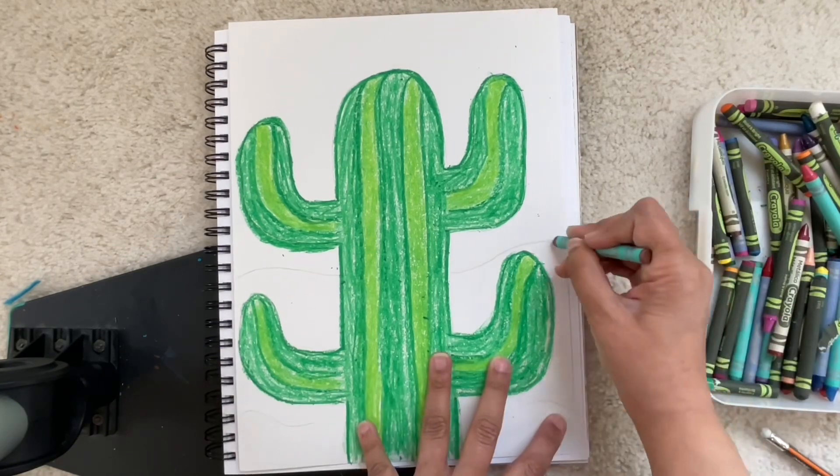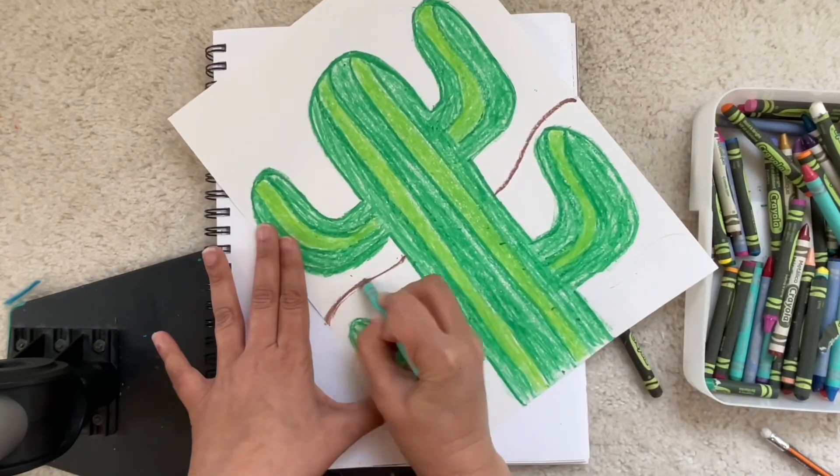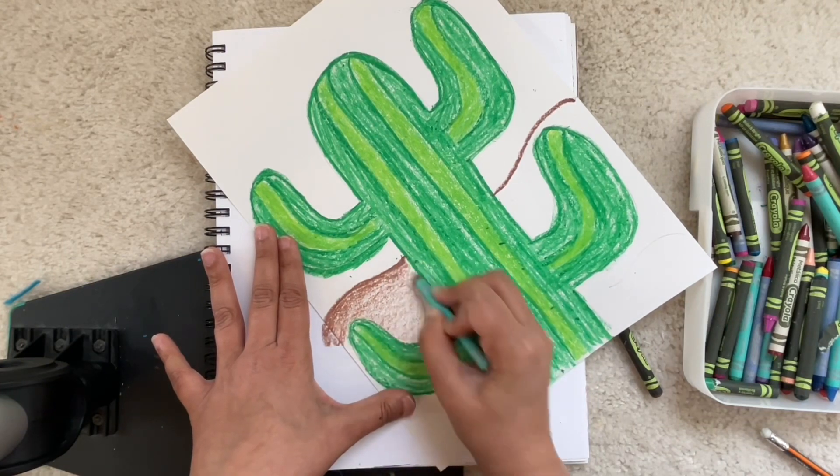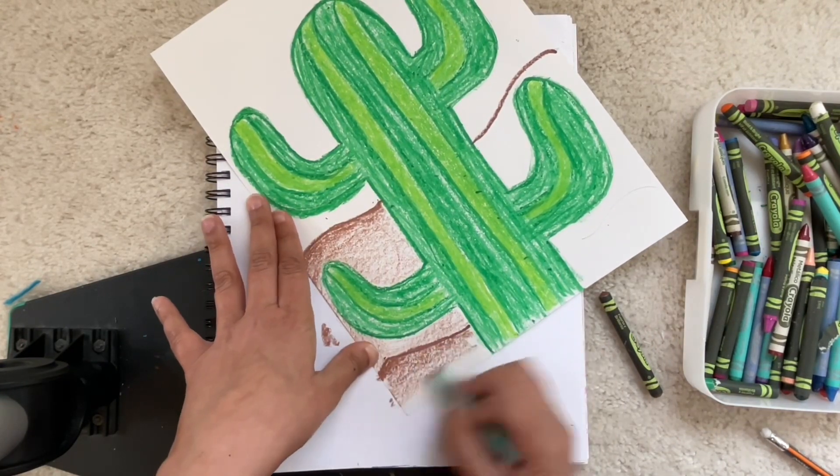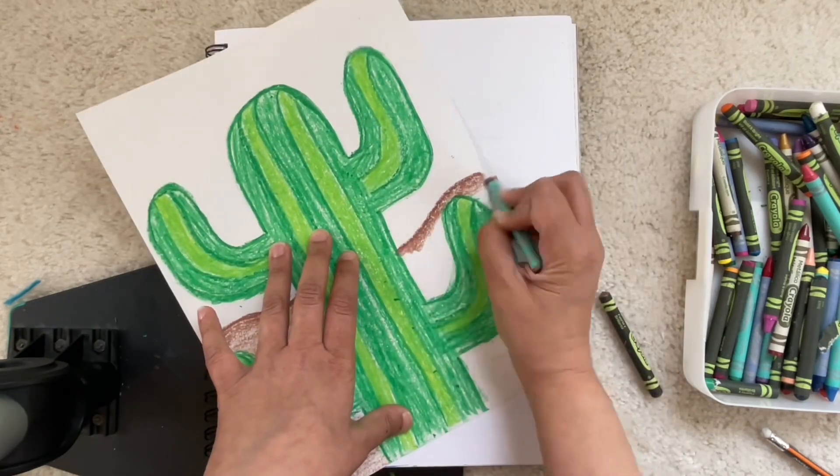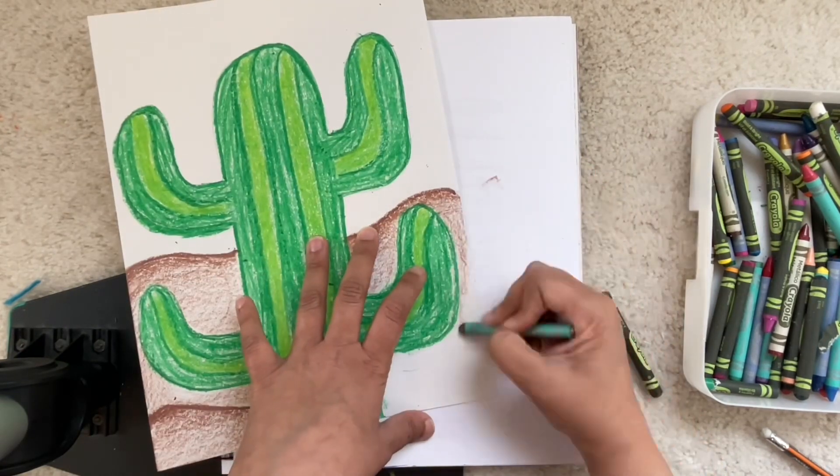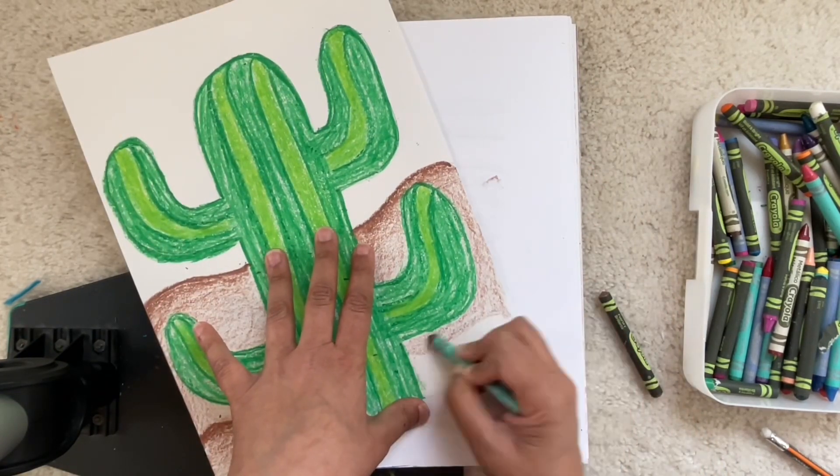Then I'm going to take my brown and I'm going to outline the hills and I'm going to color lighter as I go down. Then I outline the hill again and color lighter. This again is value. This is what makes our art look more real.